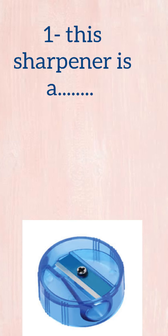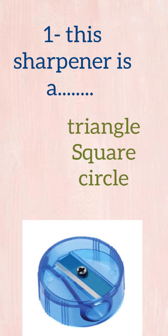Now a simple exercise. Number one: this sharpener — is it a triangle, a circle, or a square? This sharpener is a circle.